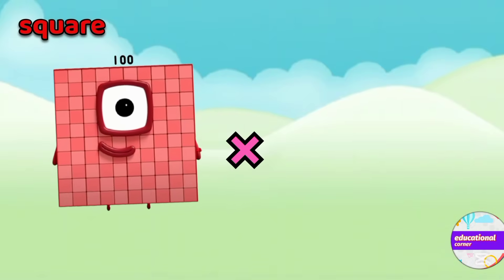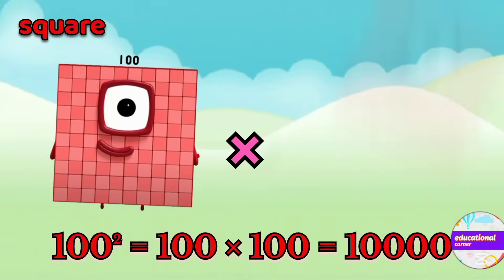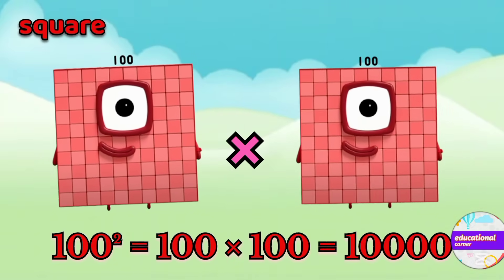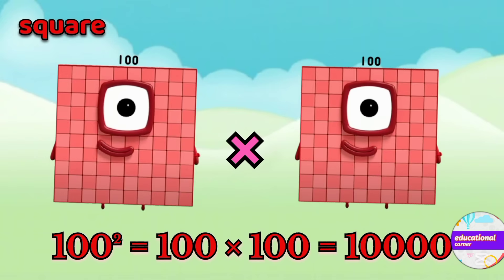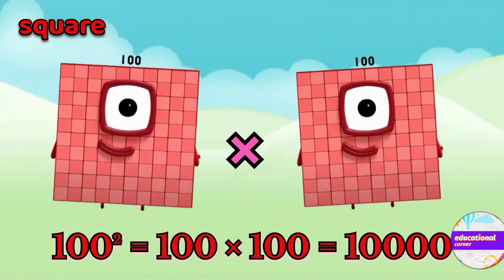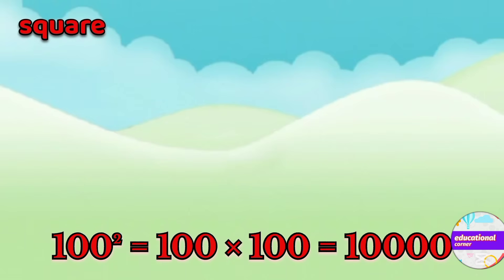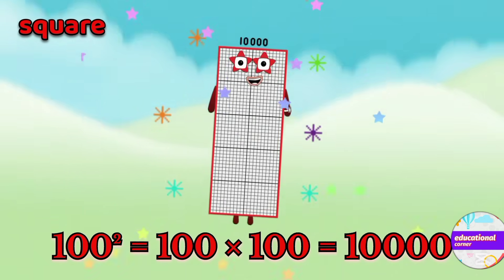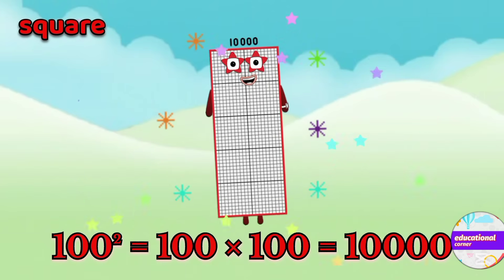The last number is 100. 100 x 100. The square of 100 is 10,000.